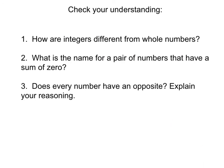Please take a moment and consider the three questions below. How are integers different from whole numbers? What is the name for a pair of numbers that have a sum of 0? And does every number have an opposite — explain your reasoning. Take a moment to record these three questions and your answers in your notes. We will discuss them in class together.